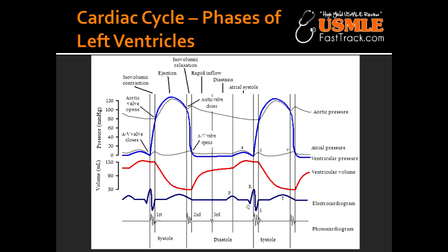Isovolumetric contraction is the period between mitral valve closure and aortic valve opening. This is the time where all the blood is sitting in the left ventricle and the ventricle is starting to contract. Once it contracts enough, it will eventually cause the aortic valve to open. Until that happens, it's considered isovolumetric contraction because the volume levels are not changing in the left ventricle. This is the period of the highest oxygen consumption.